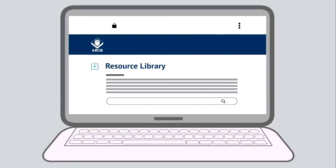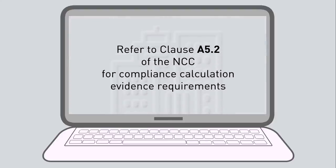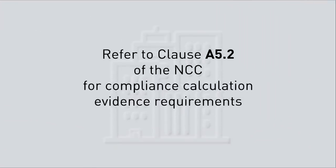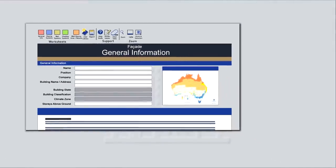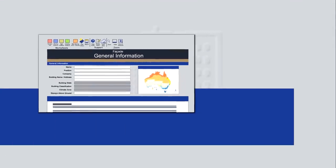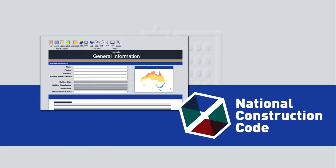The calculator is available from the ABCB website. Use of this calculator is not mandatory — you can use any method to support your calculations, as long as they meet the requirements for evidence of suitability described in Clause A5.2 of the NCC. The calculator should be used in conjunction with the NCC, which contains the defined meaning of a number of terms used by the tool.